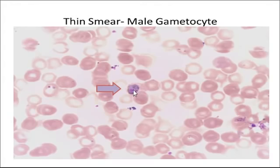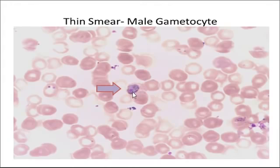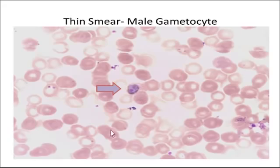This is the male gametocyte. In this, you can see the chromatin dot is more centrally located — it is a large pink to purple chromatin dot — and it is surrounded by a pale halo. The pale halo is evident here, and you can also see the cytoplasm around it.